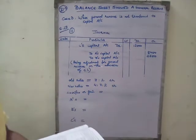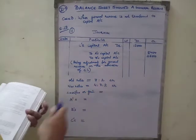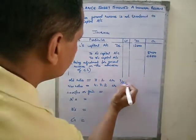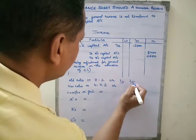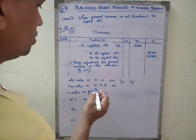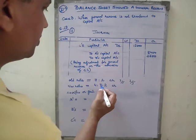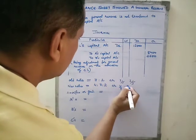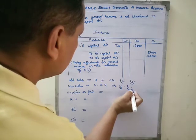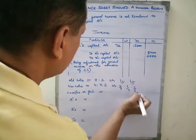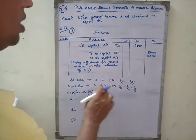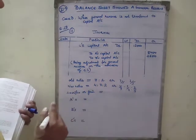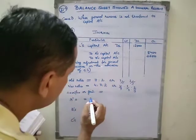In question 29, A and B are partners. The old ratio is 3:2, that is 3/5 and 2/5. The new ratio after admission of C is 4/9, 3/9, and 2/9. First of all, we calculate the sacrifice or gain using the old and new ratios.